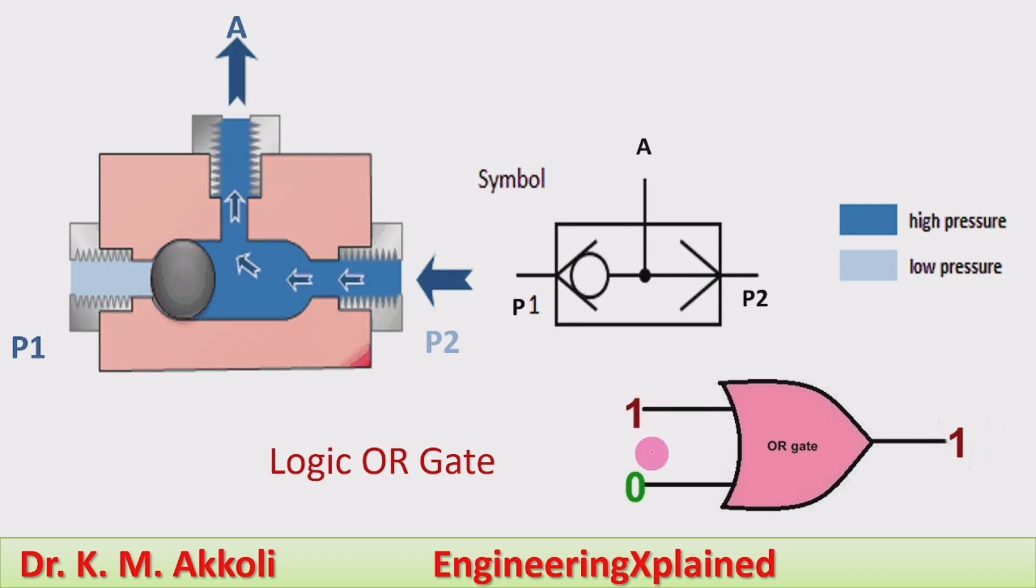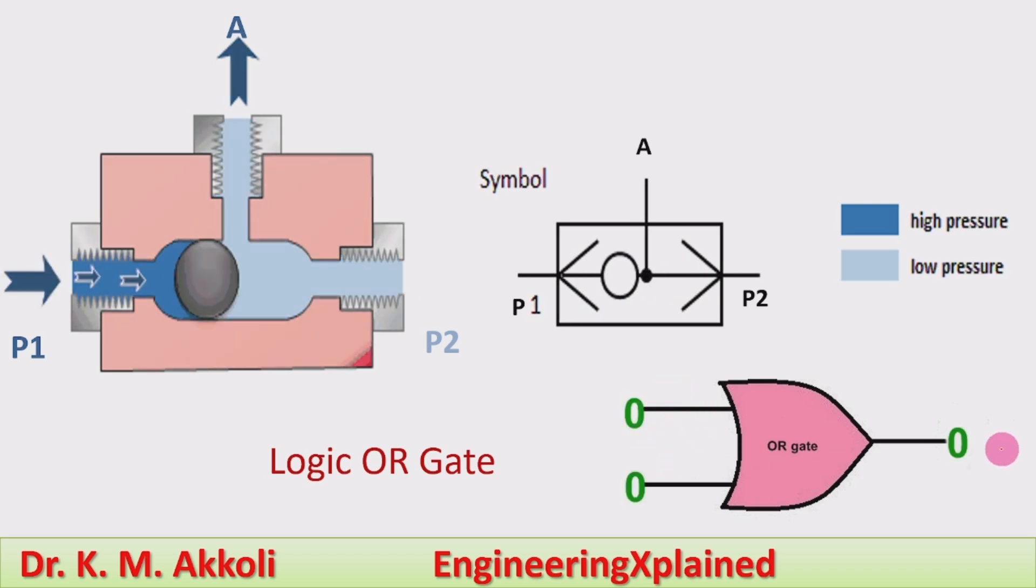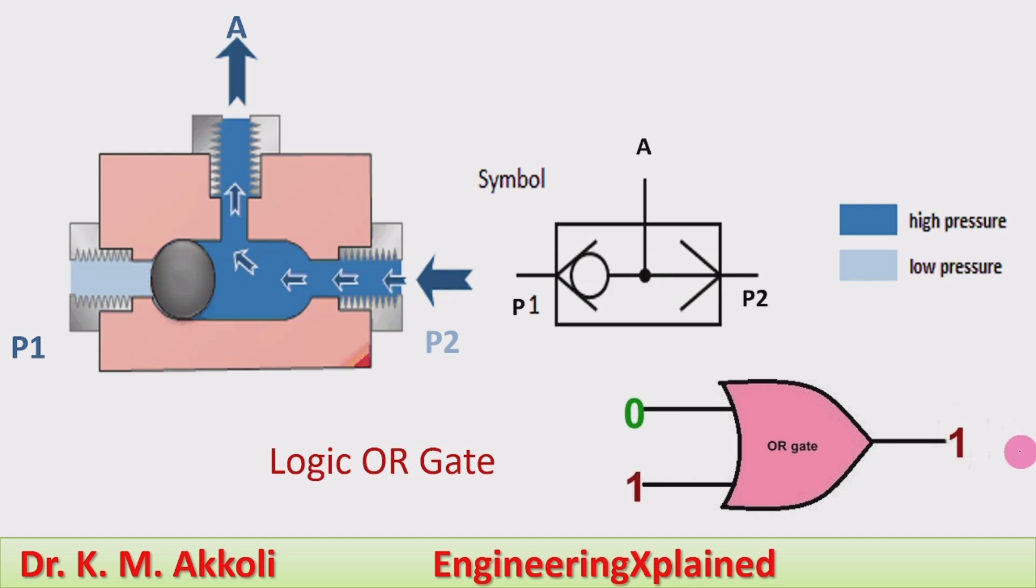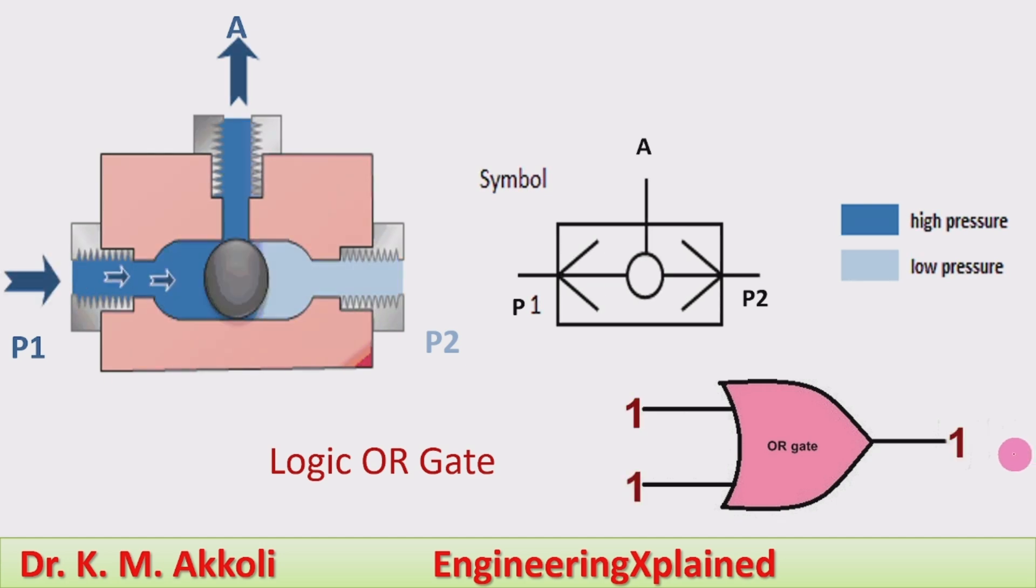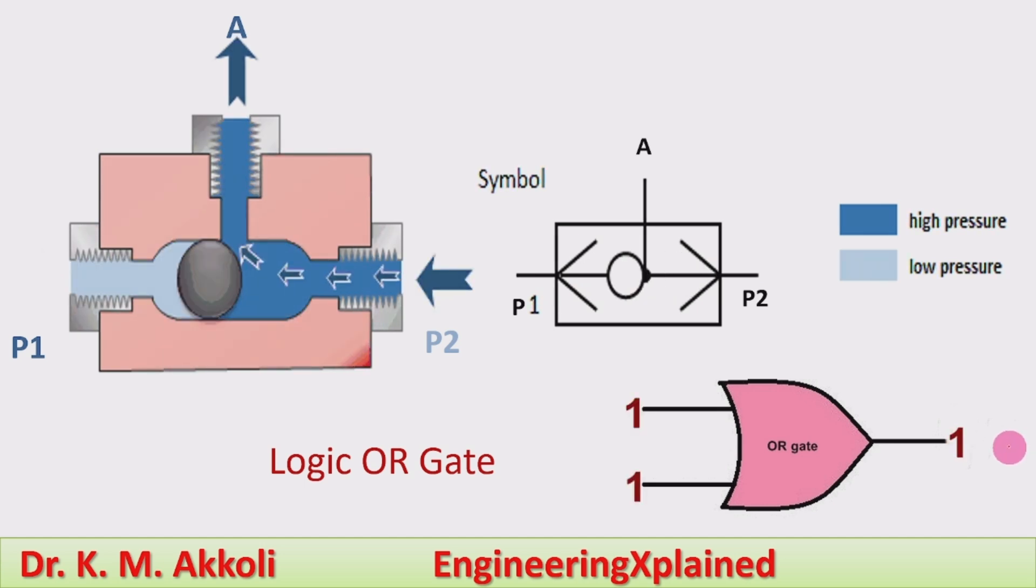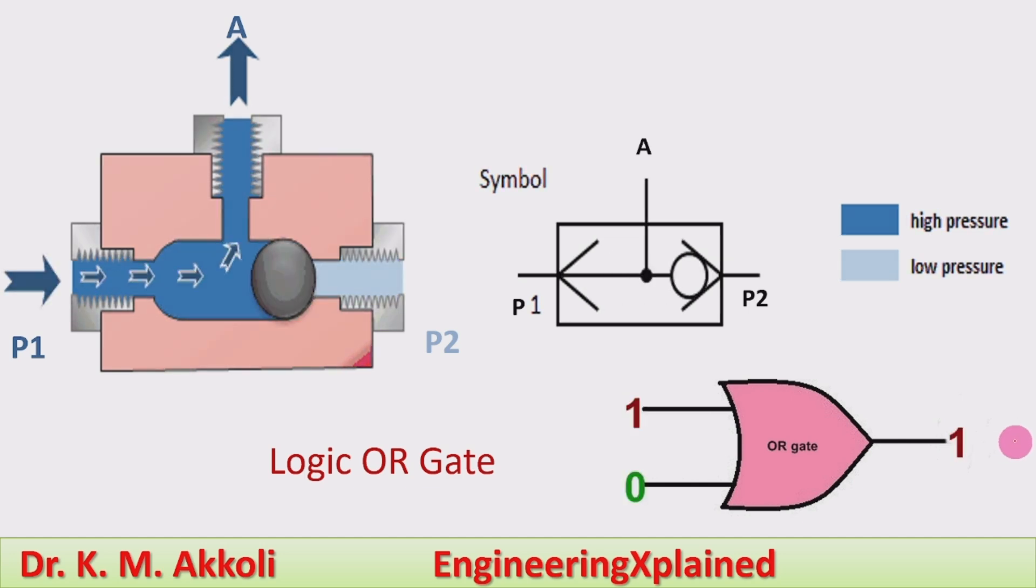Both are positive or available, then output will be available. If both are not available, then there will be no output. And that is used as an OR gate, the logic OR gate, which is used in hydraulic circuits and I'm going to explain this in further sessions.